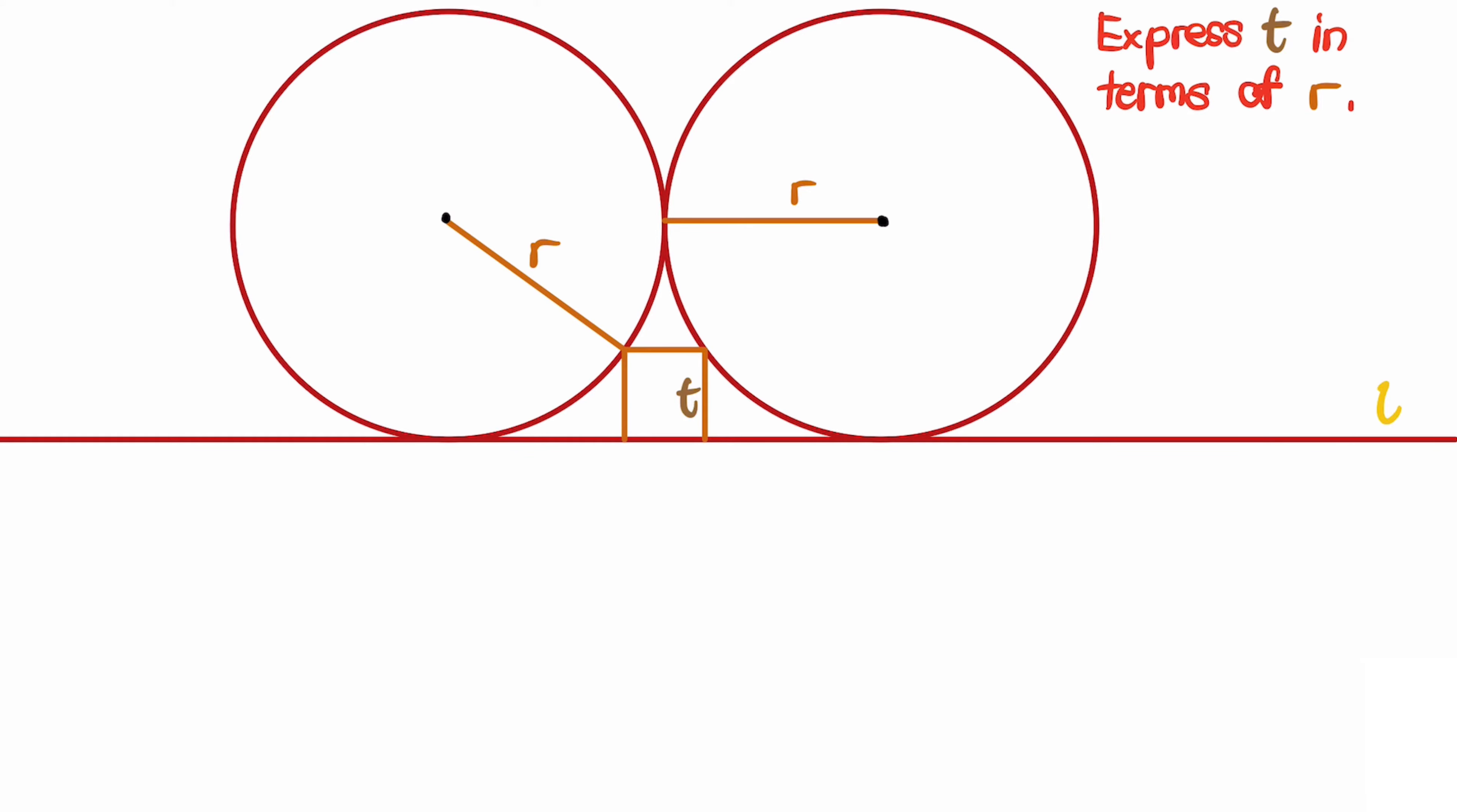In this problem, given the line l, we draw two identical circles with radius r. Between these two circles, we draw a small square with side length t. We are to express t in terms of r.